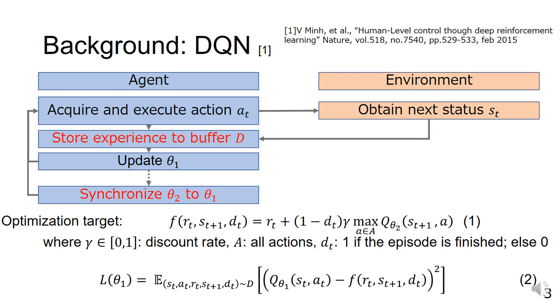Therefore, the optimization target of DQN is as shown in equation 1. Equation 1 requires the sum of the Q-value when the optimal action is taken one step ahead at the optimization target. With this optimization target, the loss function in DQN can be expressed as in equation 2.